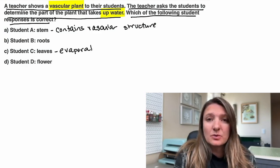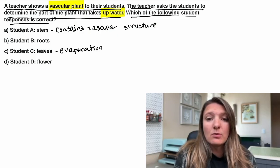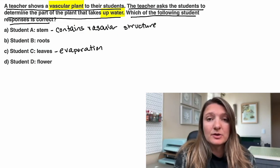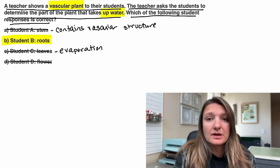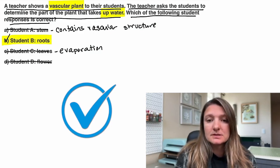C, the leaves. This is where the evaporation happens from that water that's in the stem. Flower is not included with the vascular system. So we can eliminate those three and we are left with the roots. That is where they take up water in the plant. So, B.